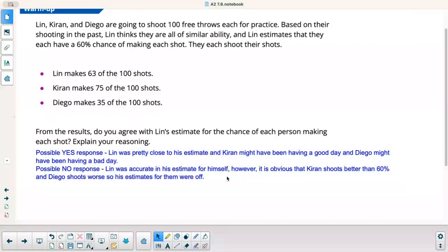Okay, so you could have went either way here. So if you said yes, I put a possible yes response here. If you agree with Lynn, Lynn was pretty close to his estimate, and Kieran might have been having a good day, and Diego might have been having a bad day. So that is possible. It's also possible to say no, as long as you back it up. If you said no, you could say Lynn was accurate in his estimate for himself. However, it's obvious that Kieran shoots better than 60%, and Diego shoots worse, so his estimates for them were off. Either way, as long as you back it up with a reason there.